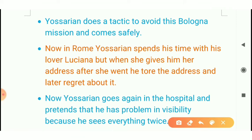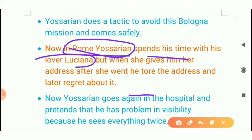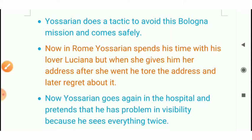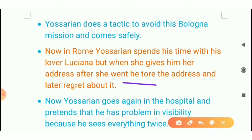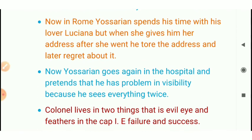The second time, the bomb line on the map is used to deceive people into thinking they have captured territory and cancel the mission. Now Yossarian is in Rome, spending time with his lover Luciana, who gives him her address but tells him she will destroy her address and he will regret it. After that, Snowden's death on a mission haunts Yossarian and he refuses to go on any more missions.